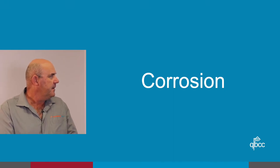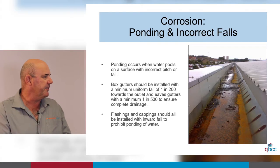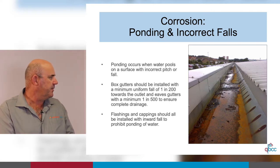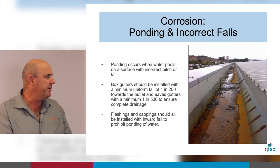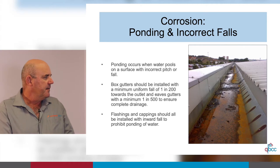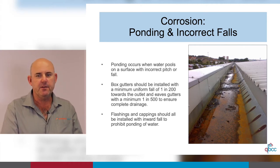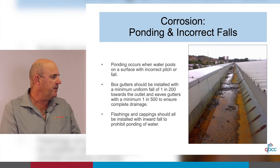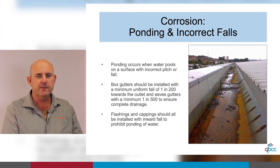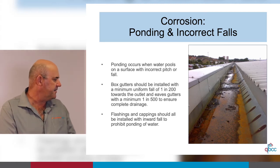Corrosion and ponding go hand in hand with dissimilar metals. We can see all three happening at once here — ponding sitting in a gutter causing corrosion, and probably some copper-saturated water entering. Ponding occurs when water pools on a surface; it's not just gutters — cappings must also fall towards the roof by three to five degrees. If you don't put fall on top of a capping, dirt builds up and when it rains it spills off one edge leaving dirty marks down the outside of the building. Box gutters: 5mm per meter; eaves gutters: 1 in 500 — flashings and cappings should always be installed with an inward fall.